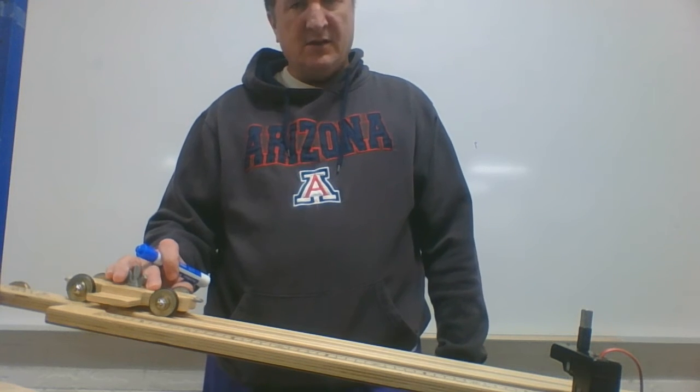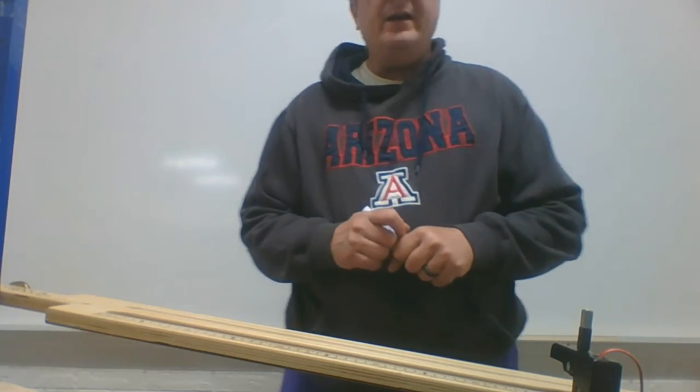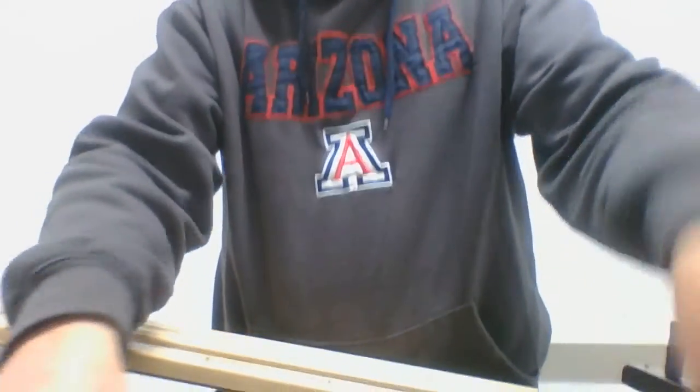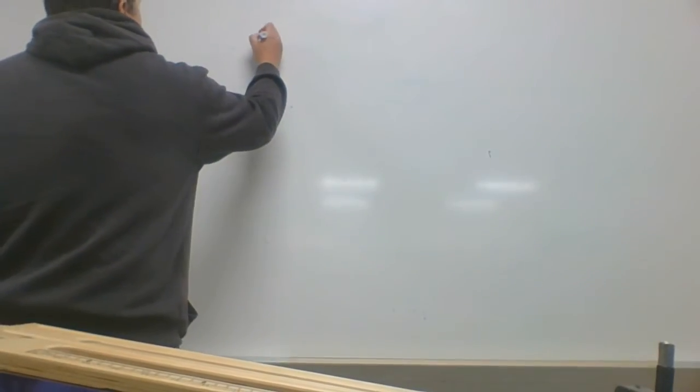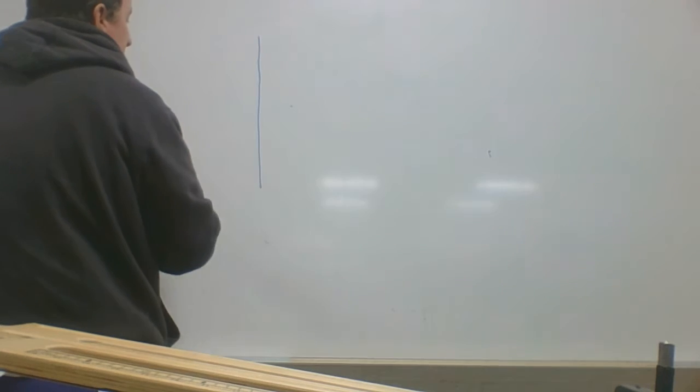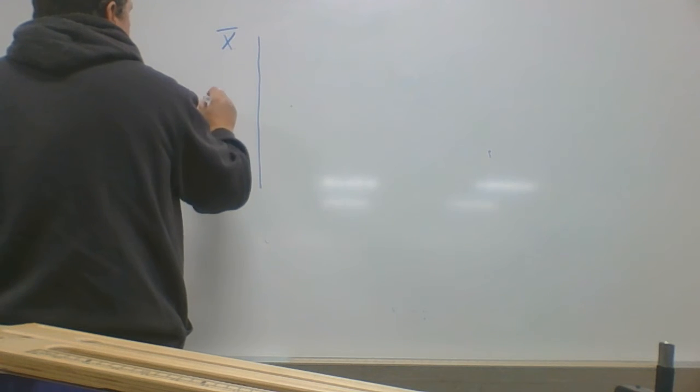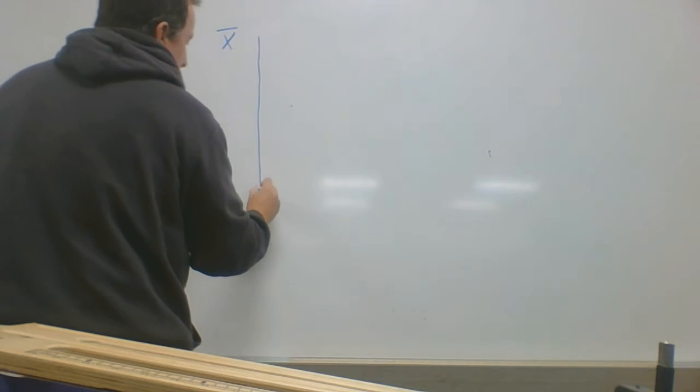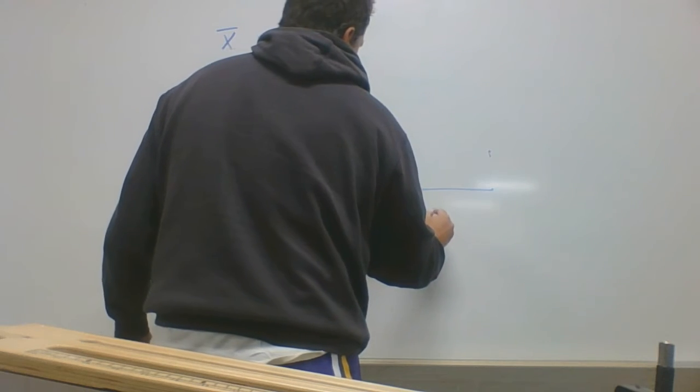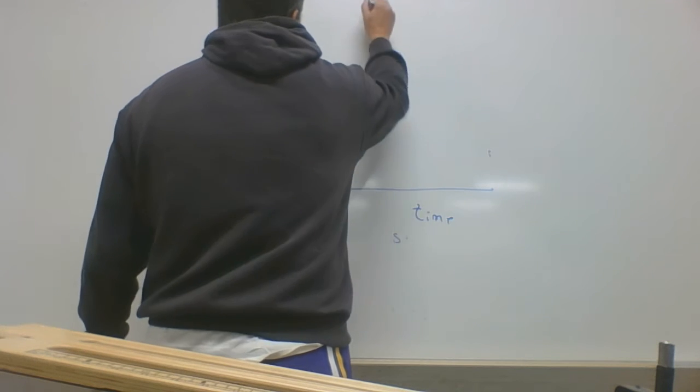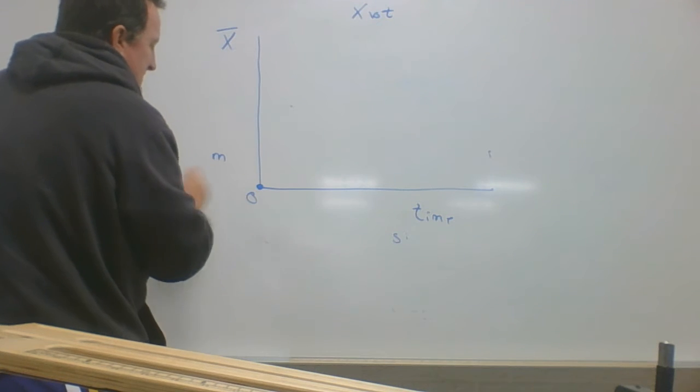We've got to define some things. At the start of the ramp, it's called the origin. We're going to plot that on a position time graph. We'll draw a vertical line and label that position in meters, and then the horizontal line will be time in seconds. Position versus time, and zero zero is the origin.